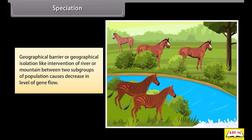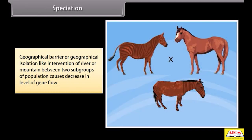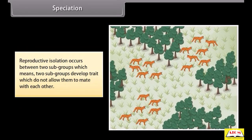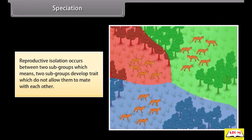Geographical barriers or geographical isolation, like the intervention of a river or mountain between two subgroups of a population, causes a decrease in the level of gene flow. Reproductive isolation occurs between two subgroups, meaning the two subgroups develop traits which do not allow them to mate with each other.